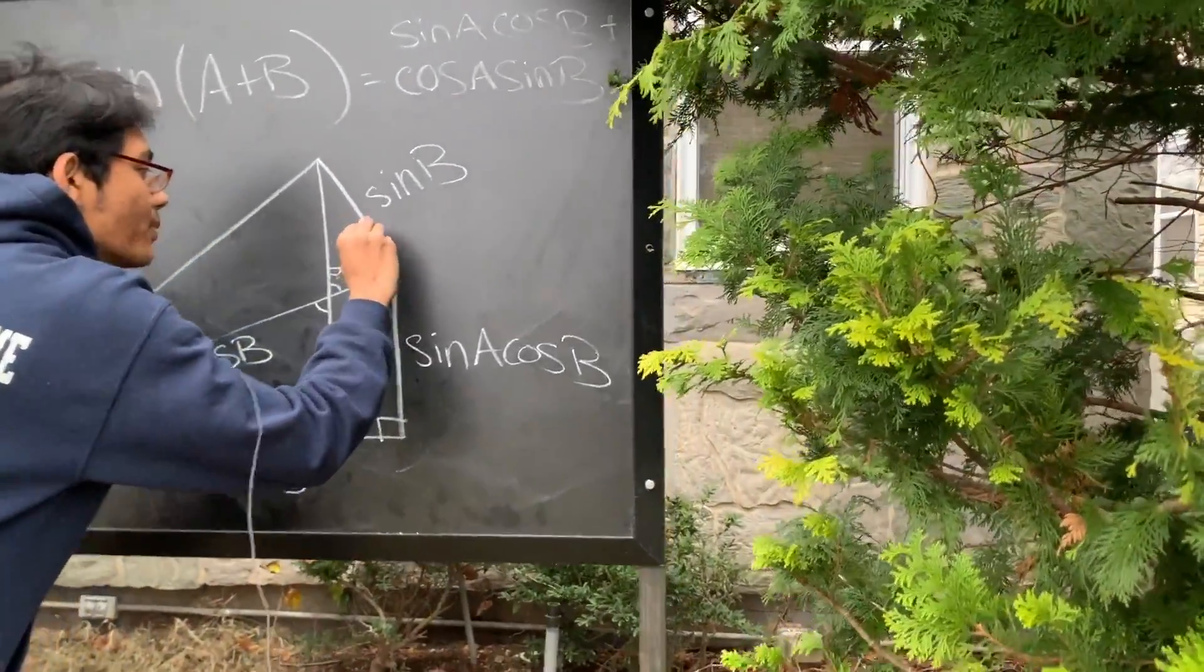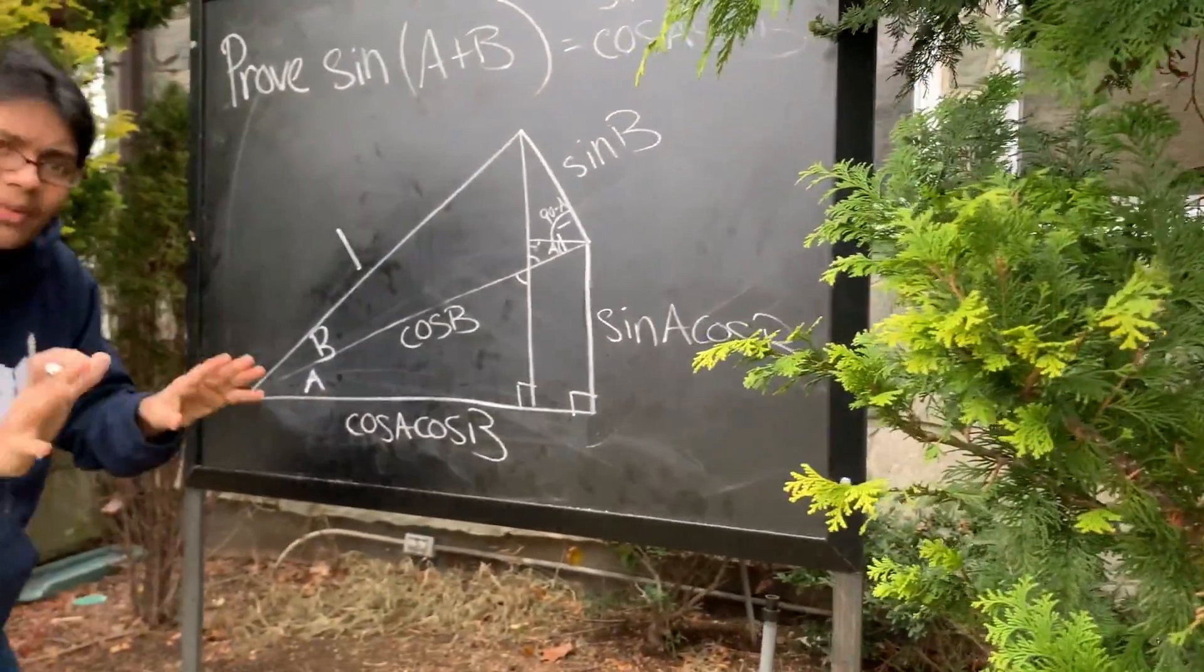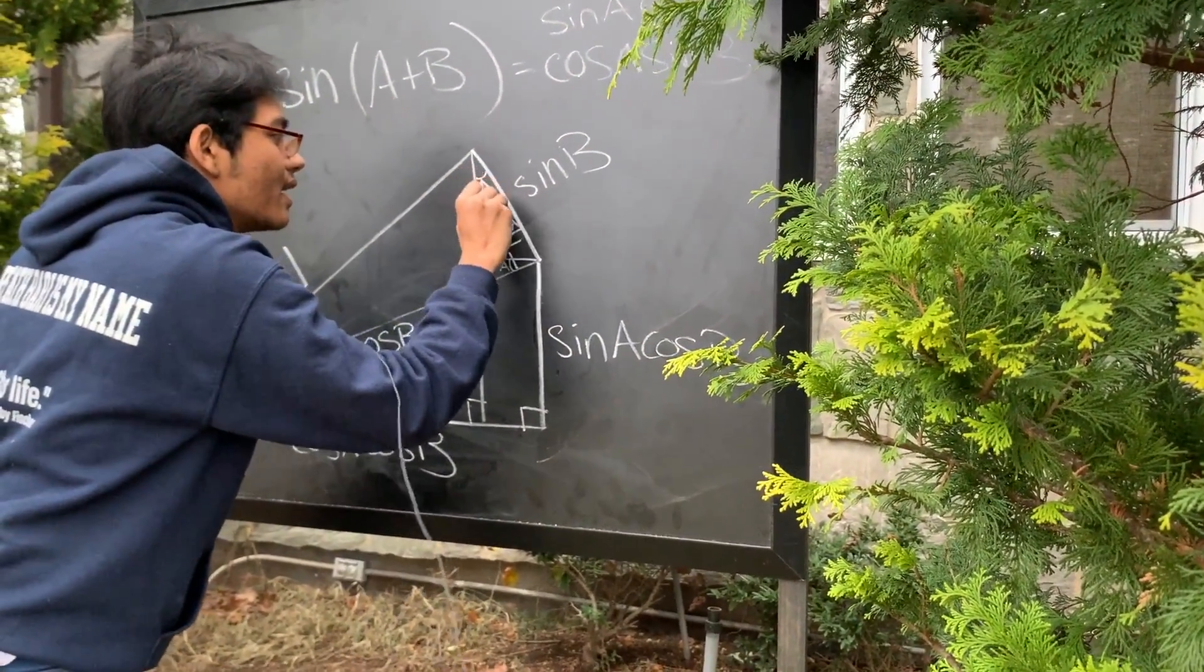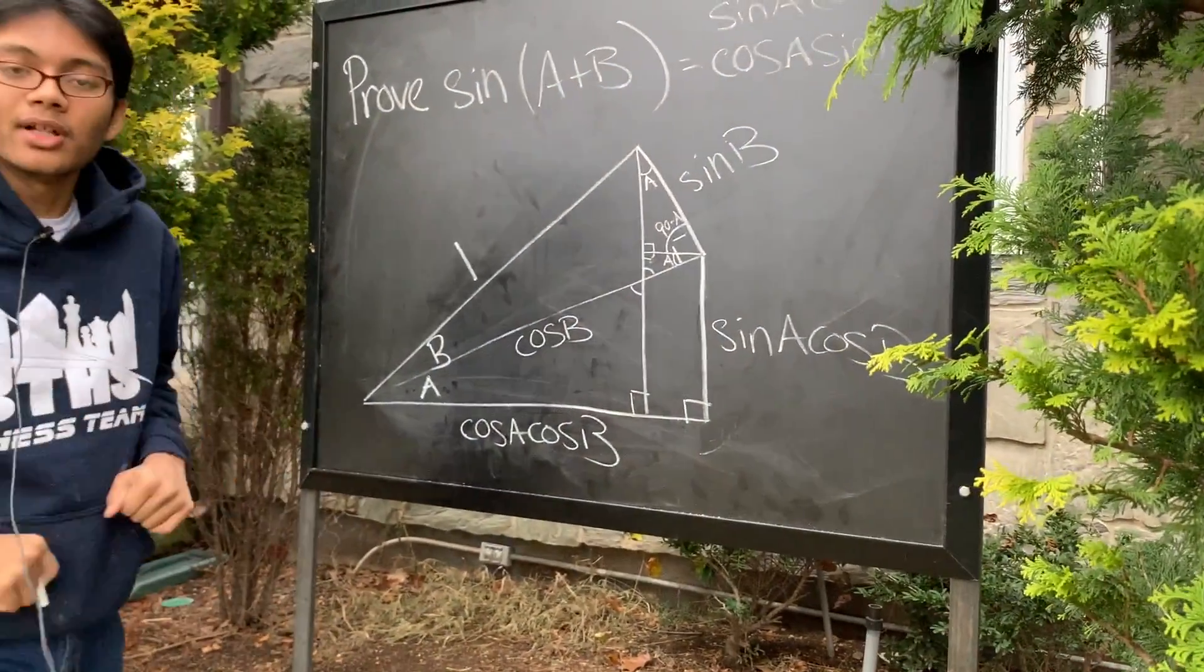Right? These are complementary angles. But think about it, if this is 90 minus A and we have a right angle here, this must be A. And so we've unlocked similar triangles.